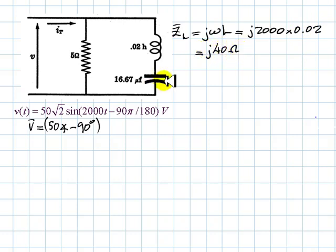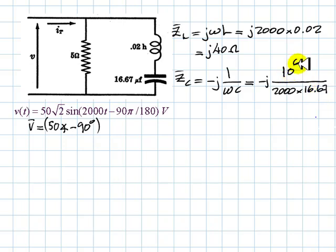What is the impedance of the capacitor? Well, the impedance of the capacitor is negative j 1 over omega C. Omega is 2000. It's given by the voltage source. Negative j 1 over 2000, that is 10 to the minus, that multiplies the capacitance of 16 and 2 thirds microfarads. That is 10 to the minus 6. I can write 10 to the 6 on the numerator.